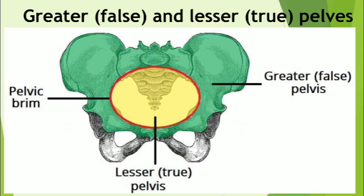The pelvic outlet — the inferior pelvic aperture — is bounded by the pubic arch anteriorly, the ischial tuberosities laterally, the inferior margin of the sacrotuberous ligament posterolaterally, which runs between the coccyx and the ischial tuberosity, and the tip of the coccyx posteriorly. The boundaries of the pelvic outlet are also the deep boundaries of the perineum.